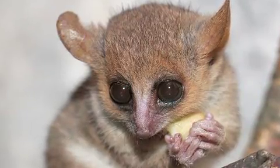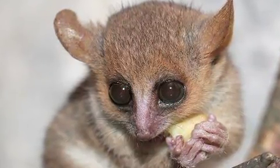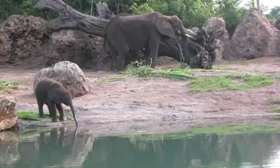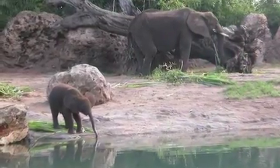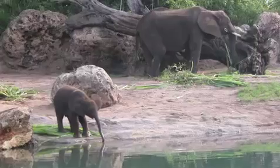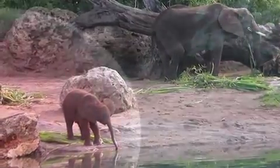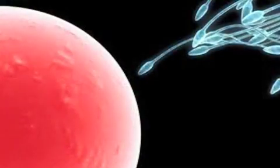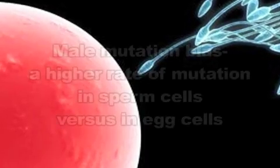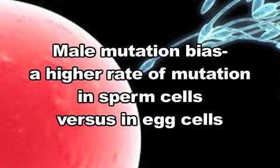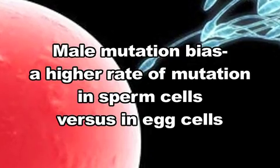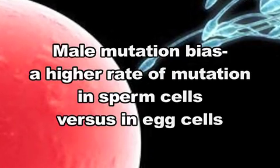After comparing 32 mammalian species, Makova's team found that the strongest, most significant life history indicator of mutation rate was, in fact, the average time between a species member's birth and the birth of its first offspring. Makova's team also found that generation time affects male mutation bias — a higher rate of DNA mutation in the male sperm versus the female egg.